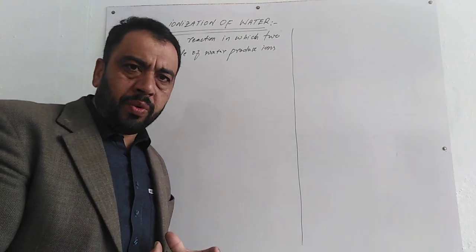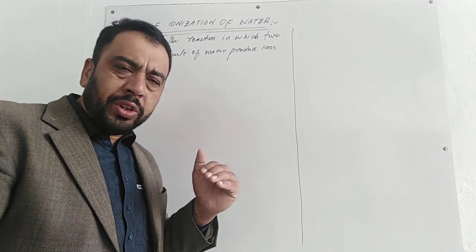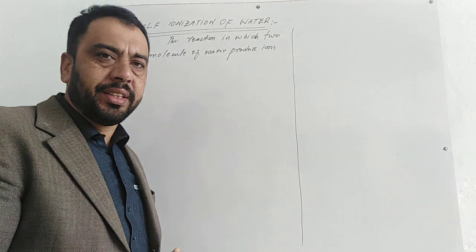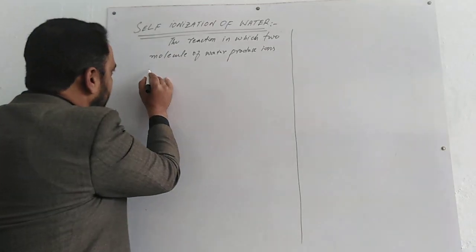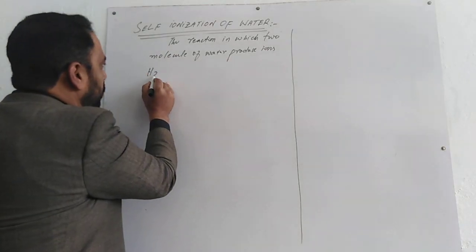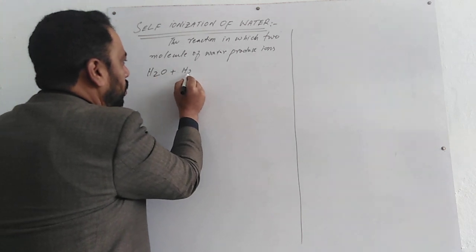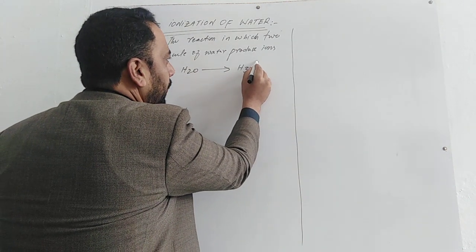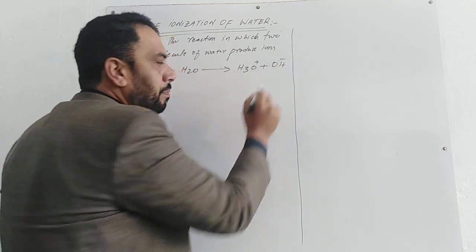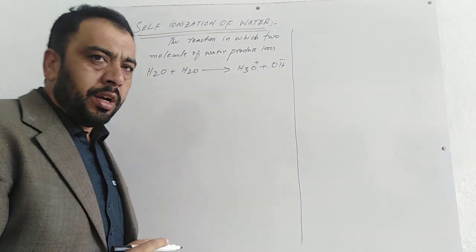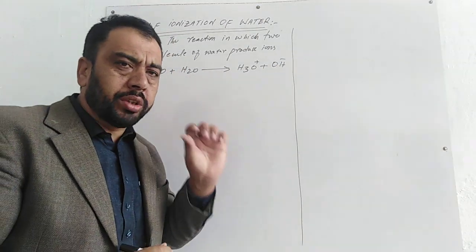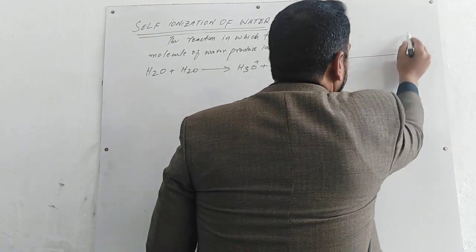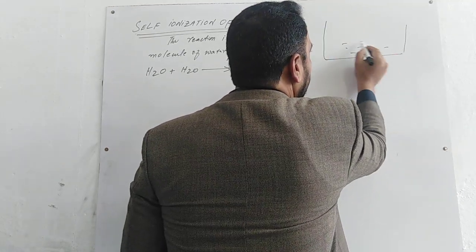When we have water, H2O plus H2O gives H3O⁺ plus OH⁻ ion. So two molecules of water react to produce a hydronium ion (H3O⁺) and a hydroxyl ion (OH⁻).